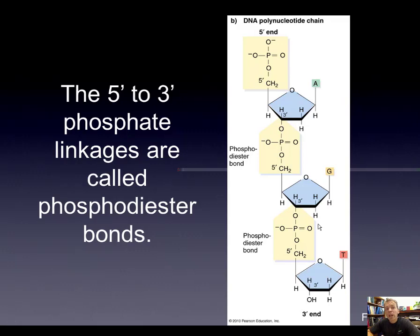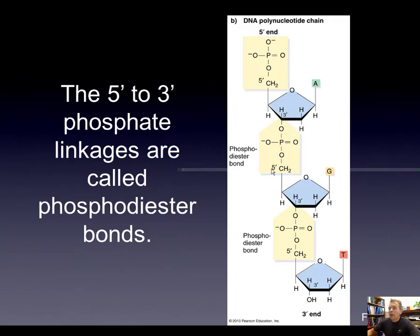Nucleotides can be linked together through the 3' carbon hydroxyl group and the 5' carbon phosphate group. The bond formed is called a phosphodiester bond. There are two phosphoester bonds here: the first is the 3' carbon plus oxygen plus phosphorus; the second is the 5' carbon, oxygen, and phosphorus. Together, those two phosphoester bonds form a phosphodiester bond, which links the nucleotides together.